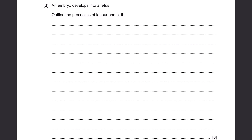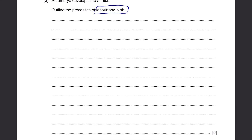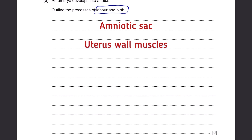Part D. An embryo develops into a fetus. Outline the processes of labor and birth. First, there will be the breaking of the amniotic sac, the amniotic fluid will be released, and the muscles in the uterus wall will start contracting to push out the baby. The cervix of the mother will dilate to make space for the baby to come out, and the baby will be delivered through the vagina.